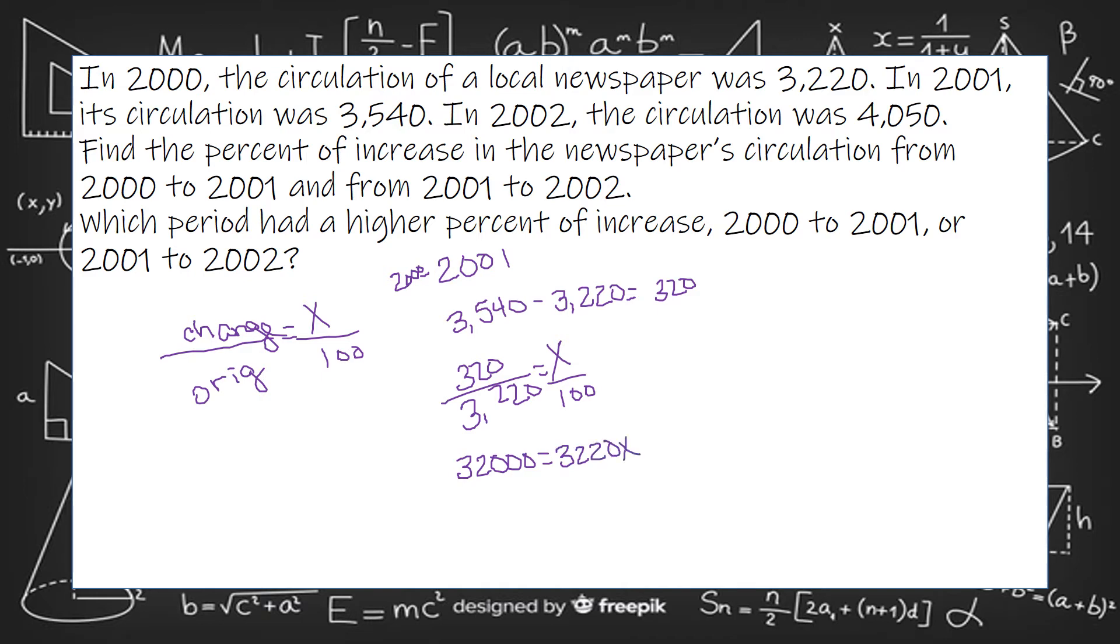Then we need to get rid of the 3,220 being multiplied by X. So we're going to divide both sides by that. And we get that the percent of increase is right at 9.9%.